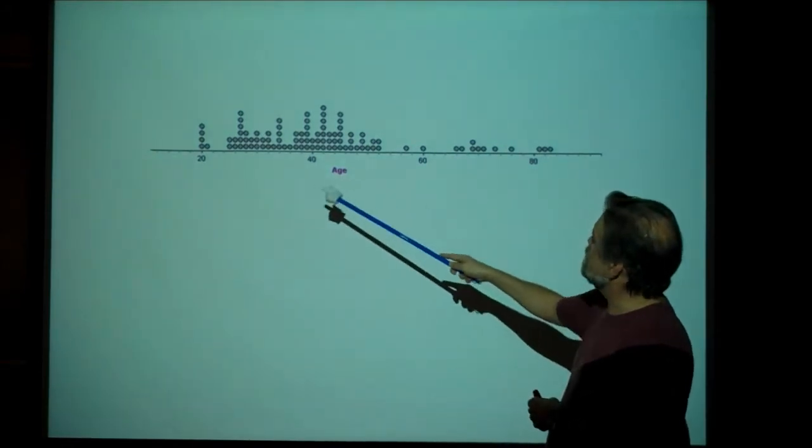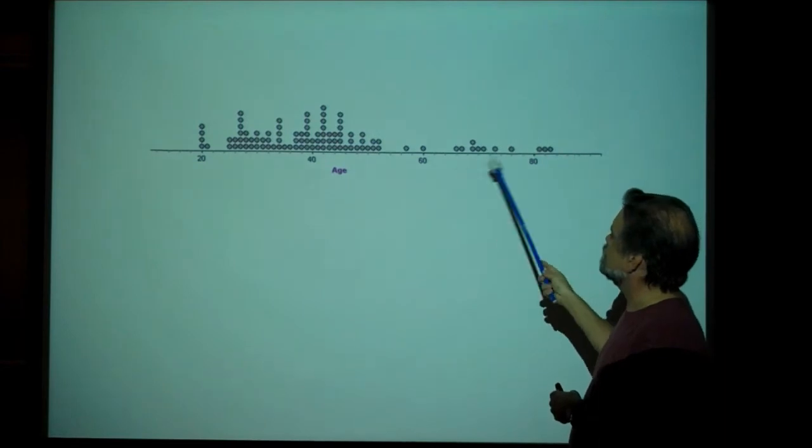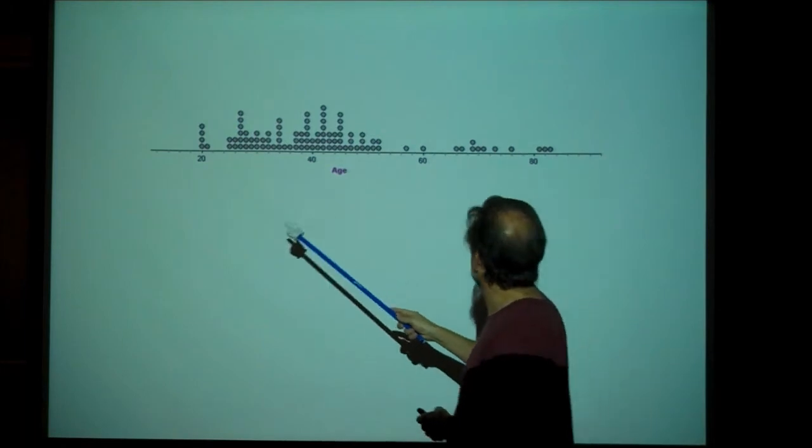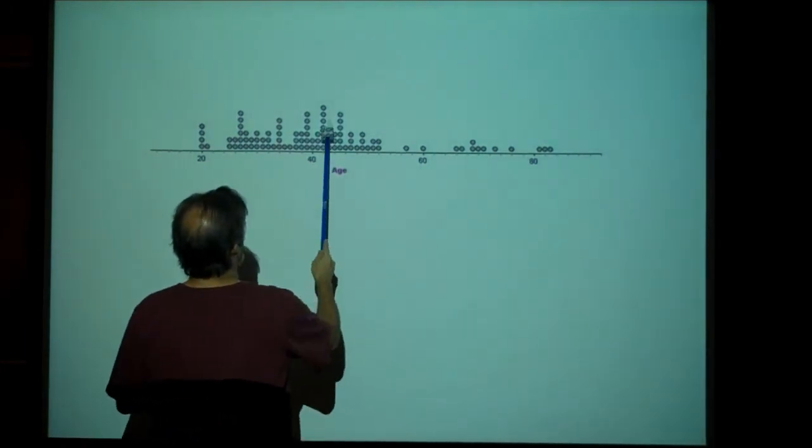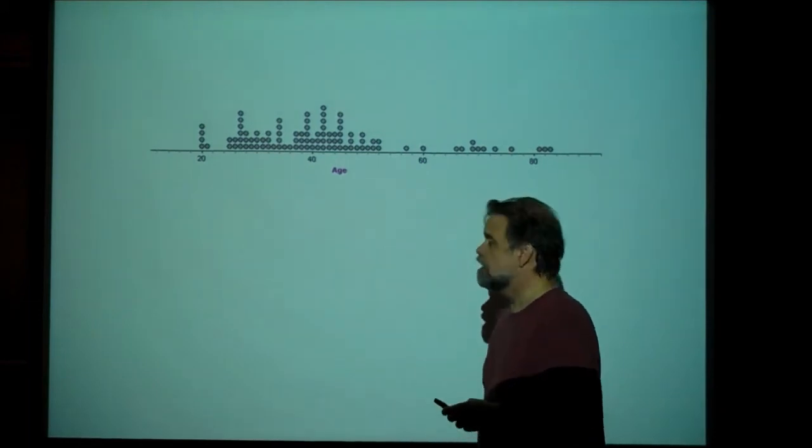So we can see that this is skewed to the right. We have a tail that kind of goes out here to the right. And we can see that the center of our data might be, yeah, low 40s, somewhere around the low 40s.